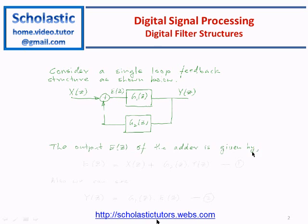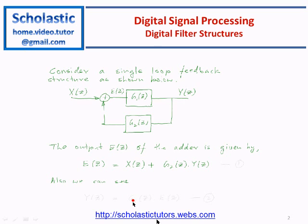So the output e(z) of this adder is given by e(z) equal to x(z) plus g2(z) times y(z). And also we can write for y(z), e(z) times g1(z). That is the second equation.